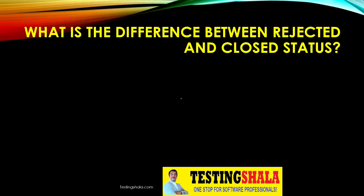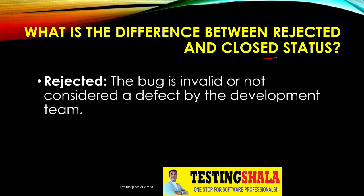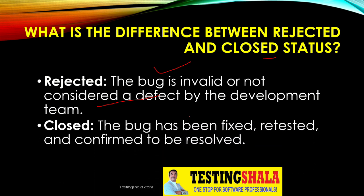What is the difference between rejected and closed status? A closed bug has been fixed, retested, and confirmed to be resolved by the tester — that is when it moves to closed status. A rejected defect is one that is invalid and not considered a defect by the development team — that is when it is marked as rejected.